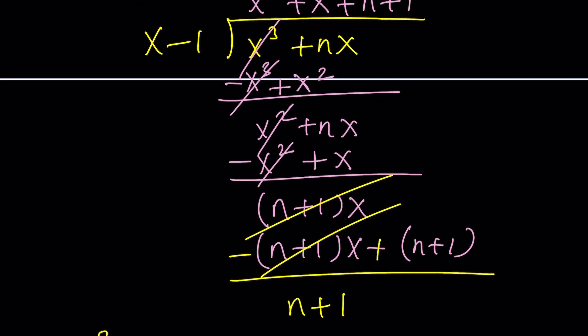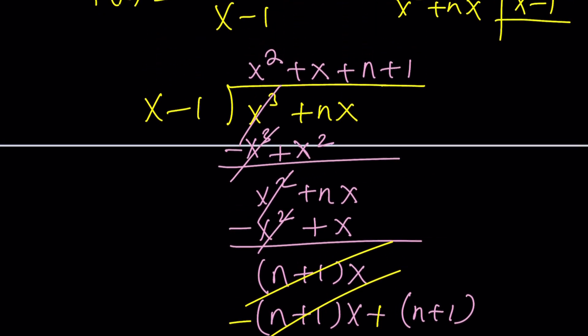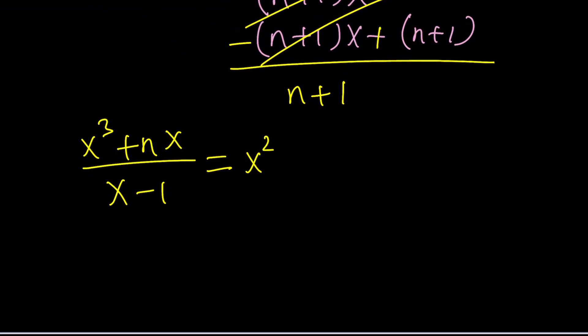We have the quotient, which is x squared plus x plus n plus 1, right? Plus a remainder, which is n plus 1. So what I'm supposed to do is divide it up by x minus 1 again, because if you multiply everything by x minus 1, you should get the original sum up. Hopefully get the idea.